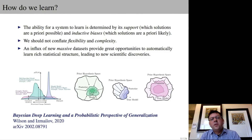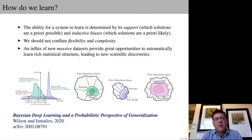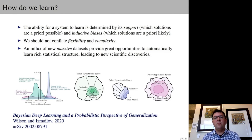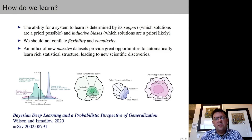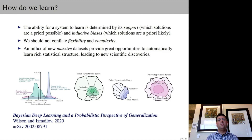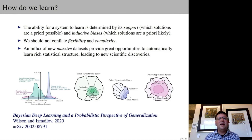In order to construct models with good generalization, we want large support — which solutions are a priori possible — and reasonably calibrated inductive biases — the distribution over which solutions are a priori likely. We want a lot of flexibility, but we should be careful not to conflate flexibility and complexity. In part two, we'll consider models with infinitely many parameters that are extraordinarily flexible and at the same time provide very good generalization, even given very small data sets. We should not treat parameter counting as a proxy for complexity.